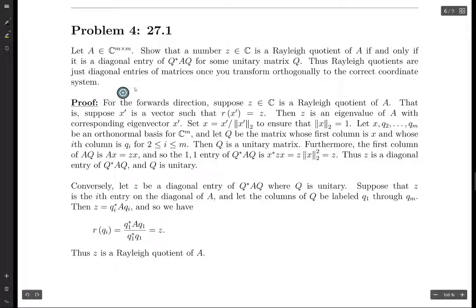Okay, so for the forwards direction, suppose Z is a Rayleigh quotient. So, suppose that X prime is a vector such that R of X prime is Z. We know that this means that Z is an eigenvalue of A with corresponding eigenvector X prime, and we want X prime to have norm 1. So let's set X to be X prime divided by the 2 norm of X prime.